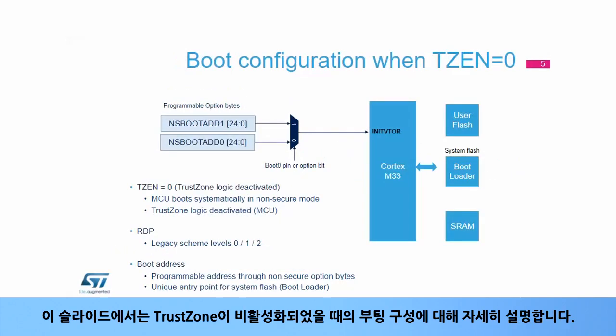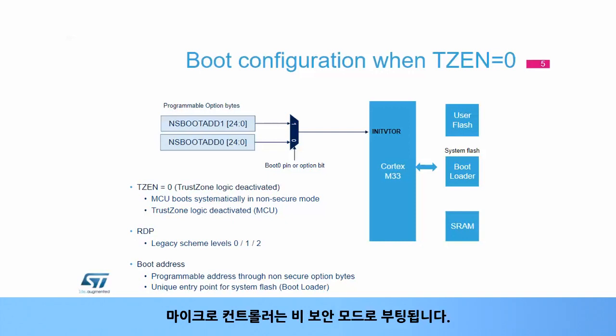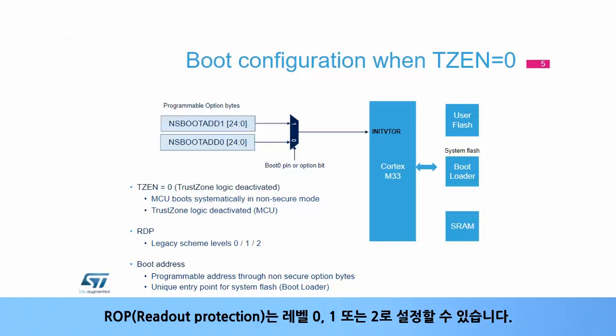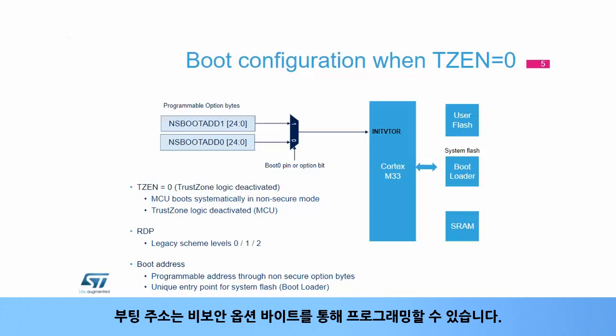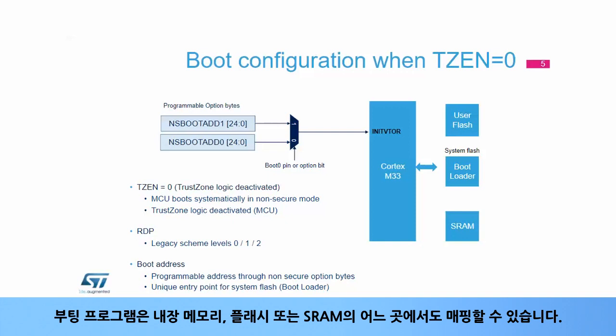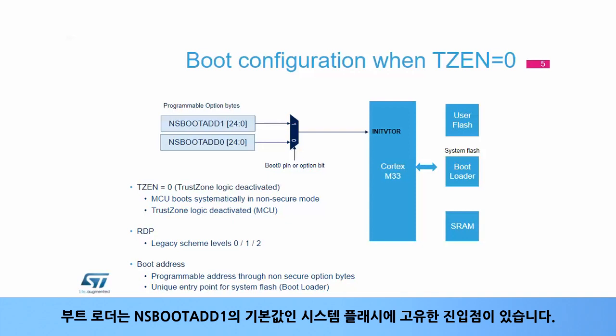This slide details the boot configuration when TrustZone is disabled. The microcontroller boots in non-secure mode. The readout protection can be set to levels 0, 1, or 2. The boot address is programmable through non-secure option bytes. The boot program can be mapped anywhere in the internal memories, flash or SRAM. The bootloader has a unique entry point in system flash, which is the default value of NS_BOOT_ADD1.